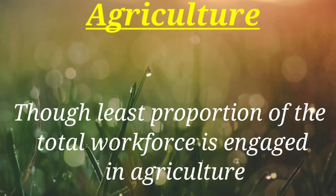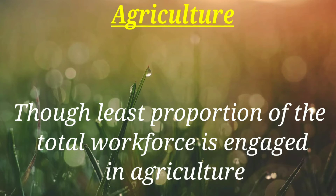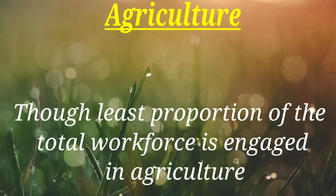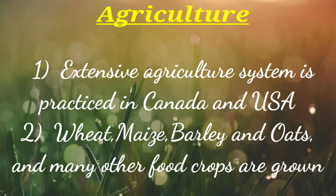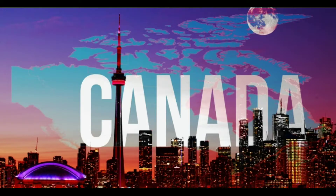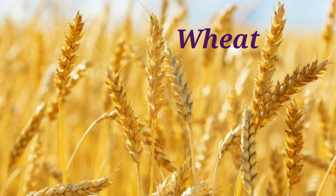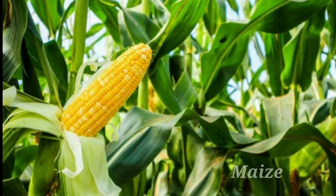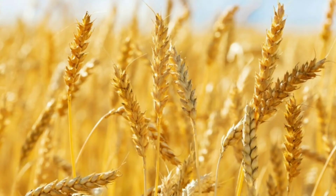Though the least proportion of the total workforce is engaged in agriculture, America's agriculture is the most productive in the world. The extensive agriculture system is practiced in Canada and USA. Both Canada and USA are the major exporters of wheat to other countries of the world. Wheat, maize, barley, oats, and many other food crops are grown.